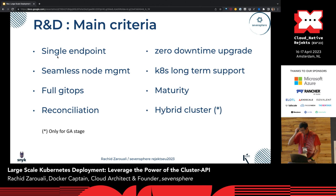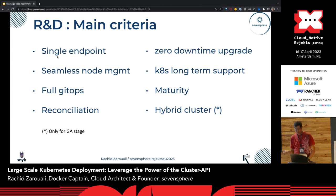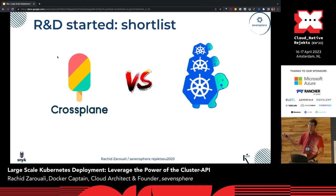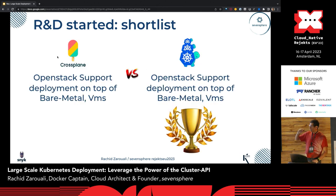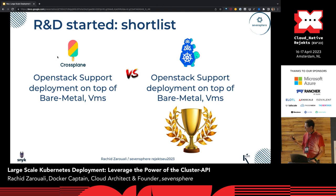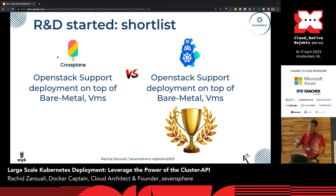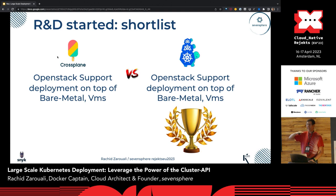Once we wrote down those criteria, I went through the full project list and came up with a shortlist: basically Crossplane from Upbound, and Cluster API. We had two final criteria for the decision: is there any production-grade OpenStack support, and are we able to leverage this solution to deploy Kubernetes on top of existing bare metal or existing virtual machines?